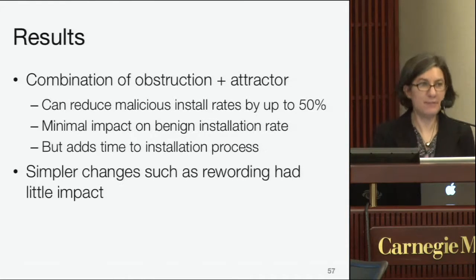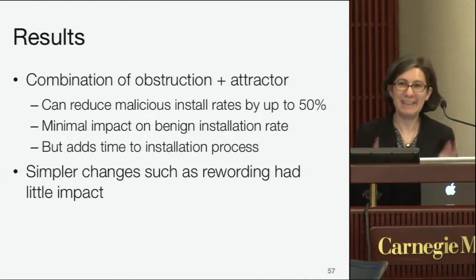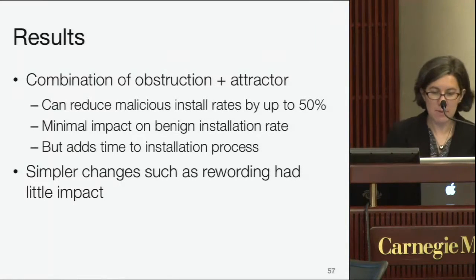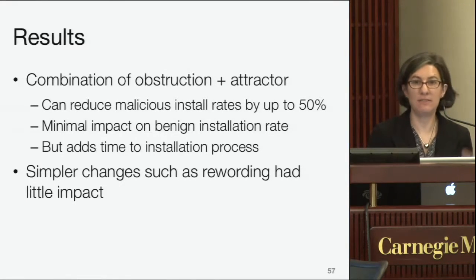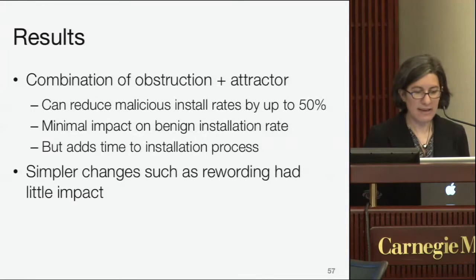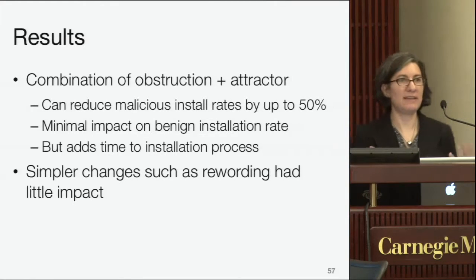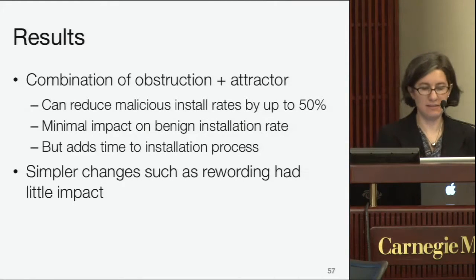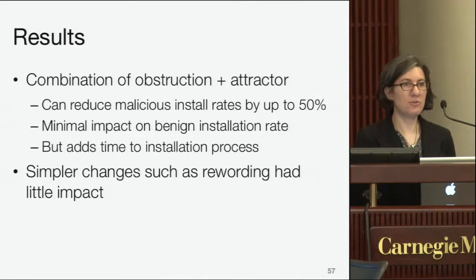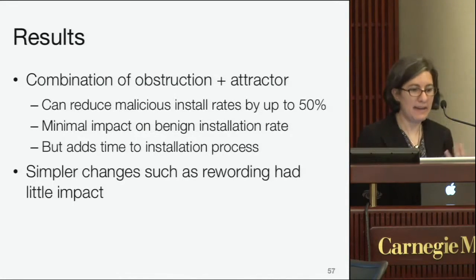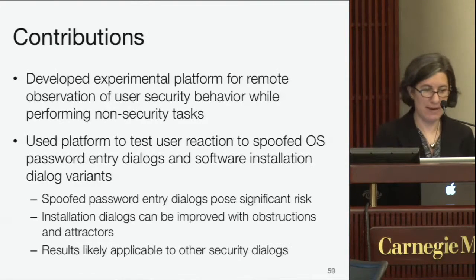We found that using techniques with both highlighting and an obstruction — requiring users to do something before installing — reduced malicious install rates by up to 50%. Some people still fell for it, but far fewer. These techniques had minimal impact on benign installation rates, which was encouraging, though they do add time to the installation process — typing in the correct name would add about 10 extra seconds. We also tried rewording the dialogue more firmly to warn users, but found those changes had very little impact.